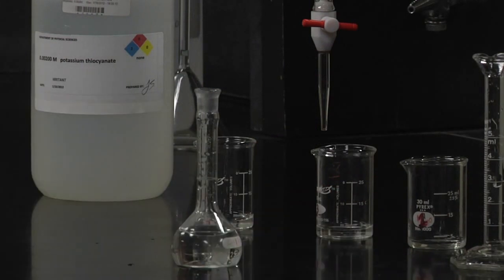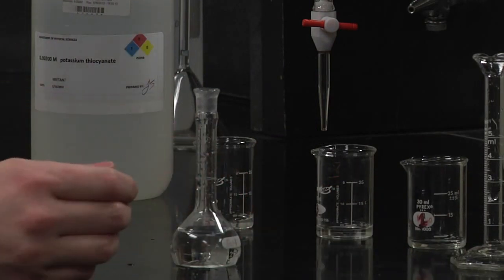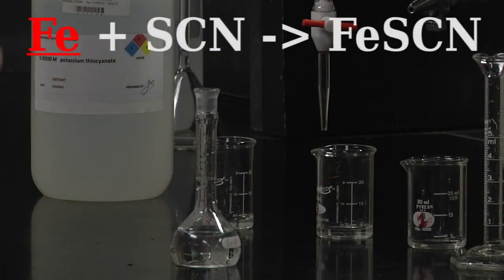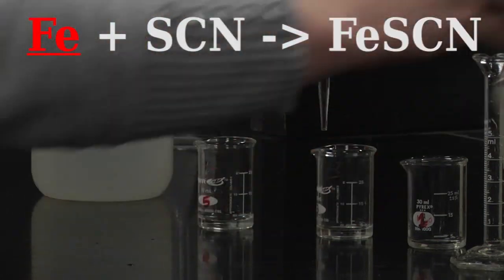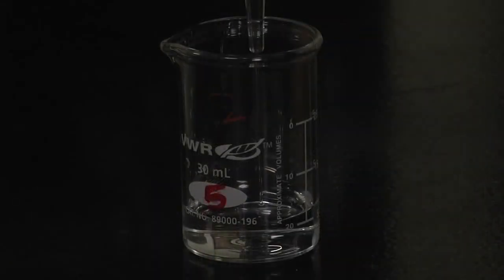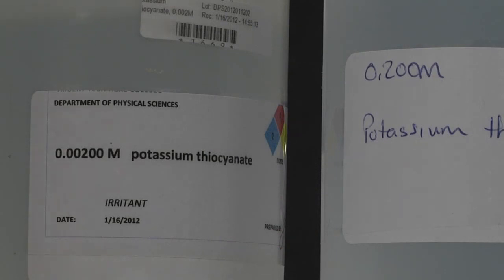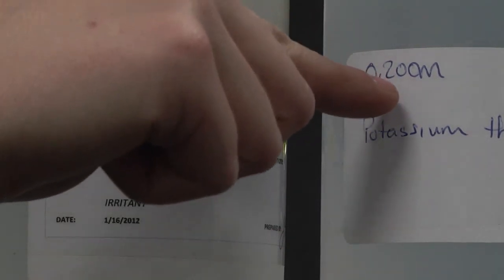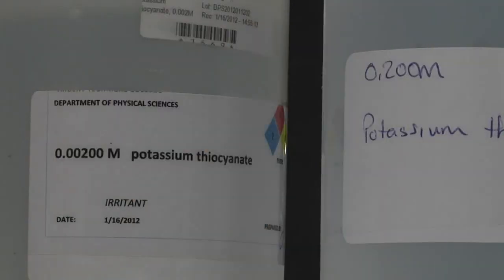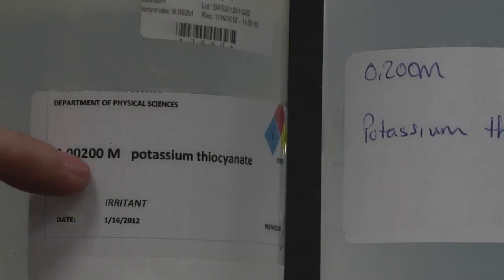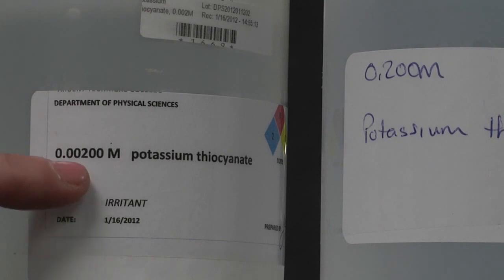If you're making table one solutions, you want to be working with 0.2 molar potassium thiocyanate, not 0.002. 0.002 is used in part two with the second table.